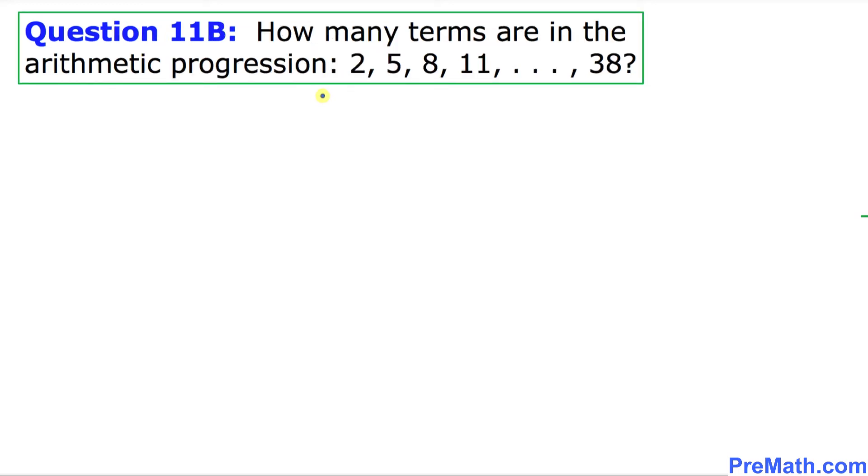Here is our next question. It states how many terms are in this arithmetic progression: 2, 5, 8, 11, and goes all the way to 38?